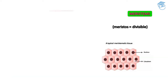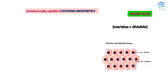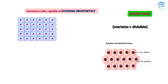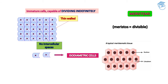Now we will talk about the meristem. Meristem is derived from the word meristose, which means divisible. Meristematic cells keep on dividing — immature cells capable of dividing indefinitely. They are thin-walled, have no intercellular space between them, and are isodiametric in nature, meaning all cells are of the same diameter. This is the typical meristematic tissue diagrammatic representation, showing the conspicuous nucleus and cytoplasm. This is the TS — transverse section — of meristem.